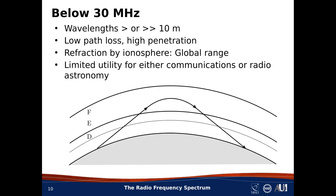Finally, let me talk about frequencies below 30 MHz. The most remarkable thing about this band is that path loss is very low, and the ionosphere acts like a reflector — as shown in the figure — allowing global communications with very low transmit power. The same phenomenon makes it relatively difficult to do ground-based radio astronomy at these frequencies. Other than long-range communications, frequencies below 30 MHz are not great for general communications purposes, because the whole band is only tens of MHz wide — a tiny amount of bandwidth.